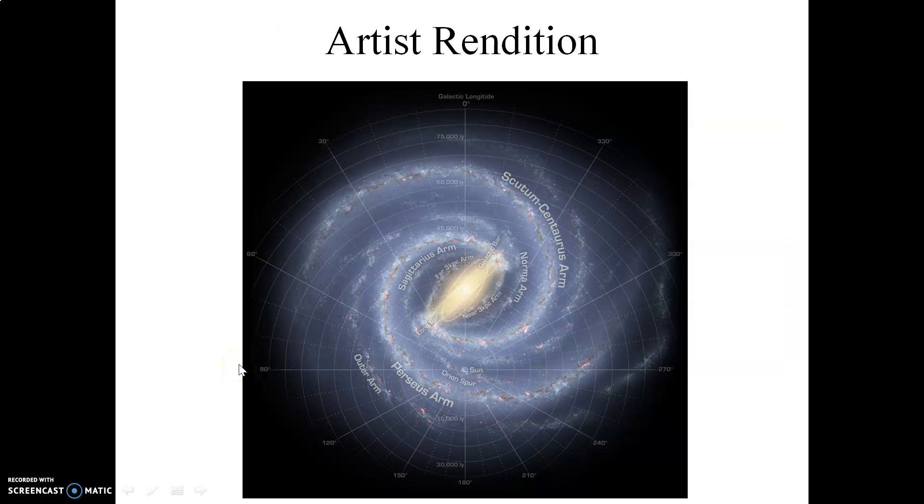Here's an artist's rendition of the Milky Way and the sun's location within. So the Milky Way galaxy is an example of what is called a barred spiral galaxy. You have this bar of material here. This bar of material is made up of stars, dust, and gas.